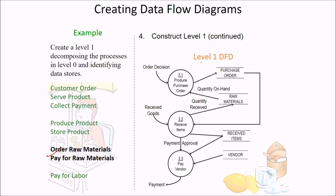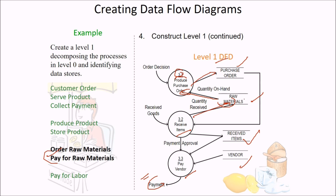Then we come to raw materials. Level 1 DFD for procurement includes purchase order, raw materials, receive items, and vendor. Process 3.1 is produce purchase order, 3.2 is receive item, and 3.3 is pay vendor. This will go to payment. The produce purchase order will go to the purchase order data store. Raw material quantity on hand and quantity received go to raw materials. The purchase order goes to receive items, receive items interacts with the receive items data store, and then receive items feeds pay vendor. Payment approval goes to pay vendor and then payment is done.